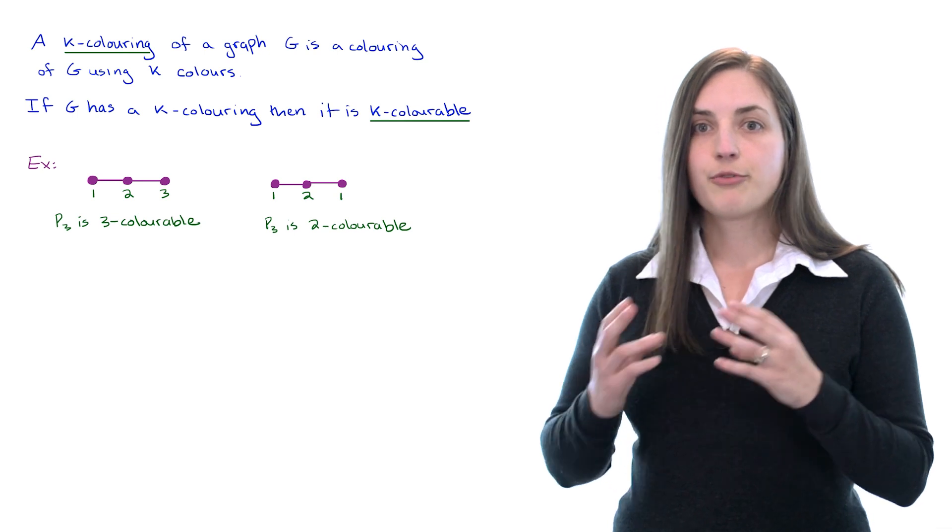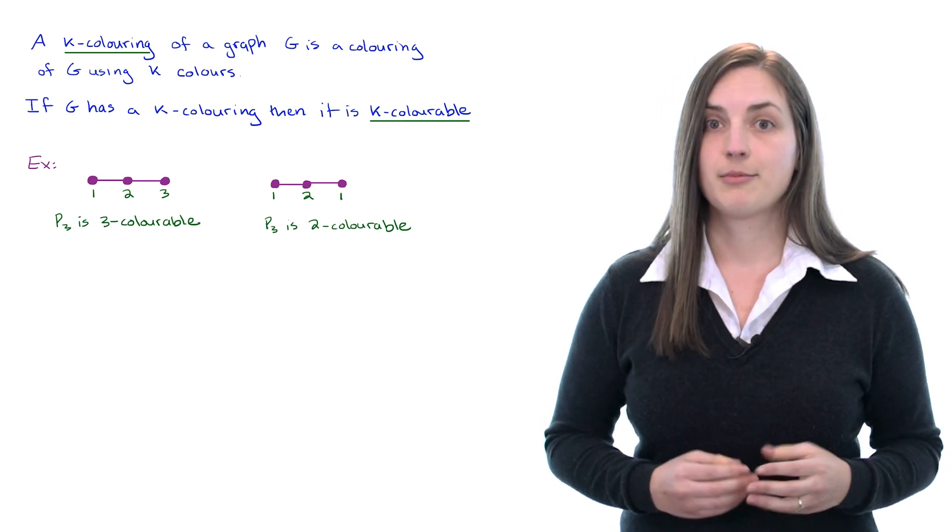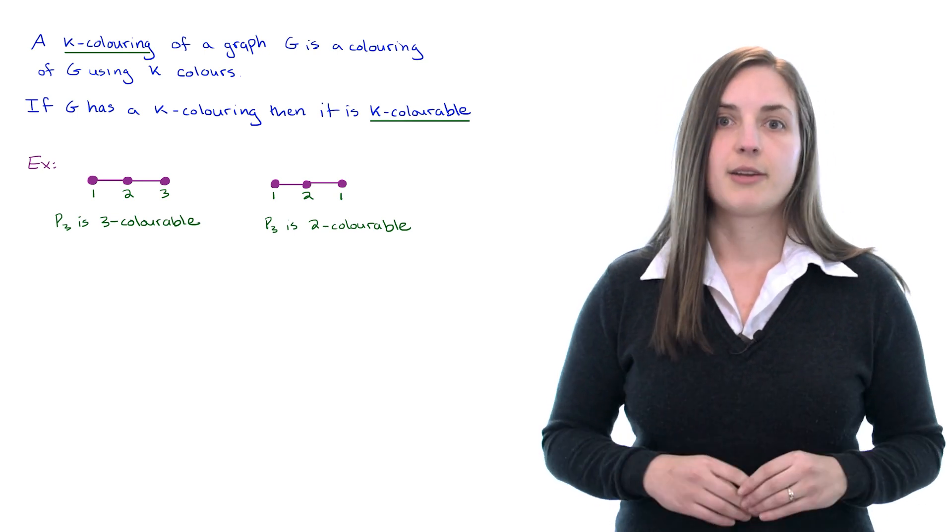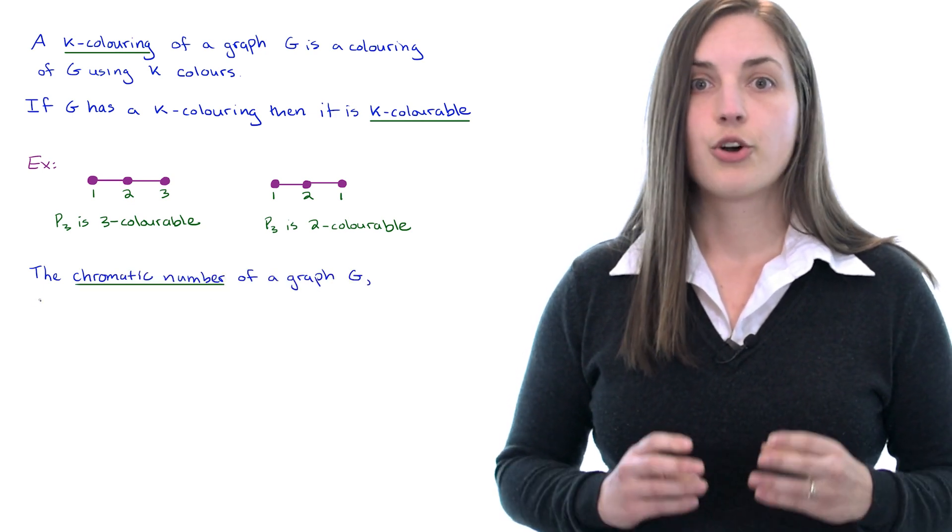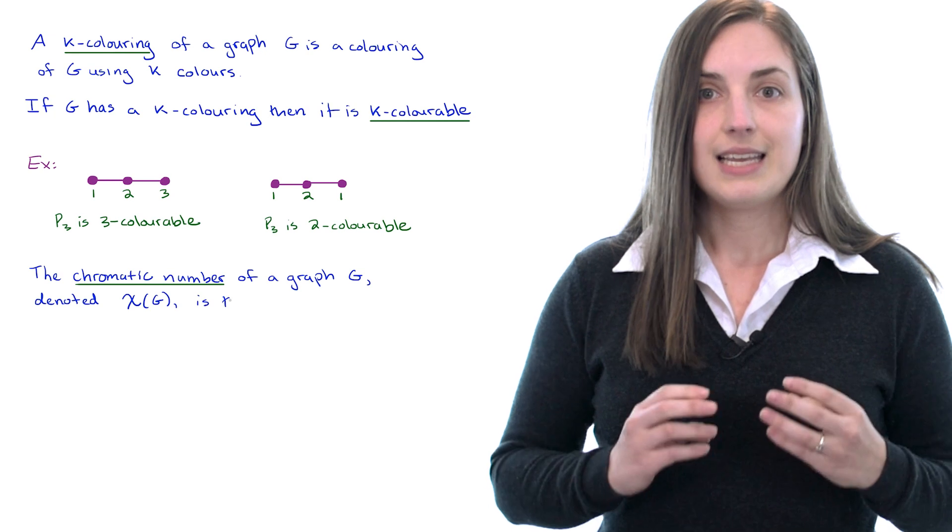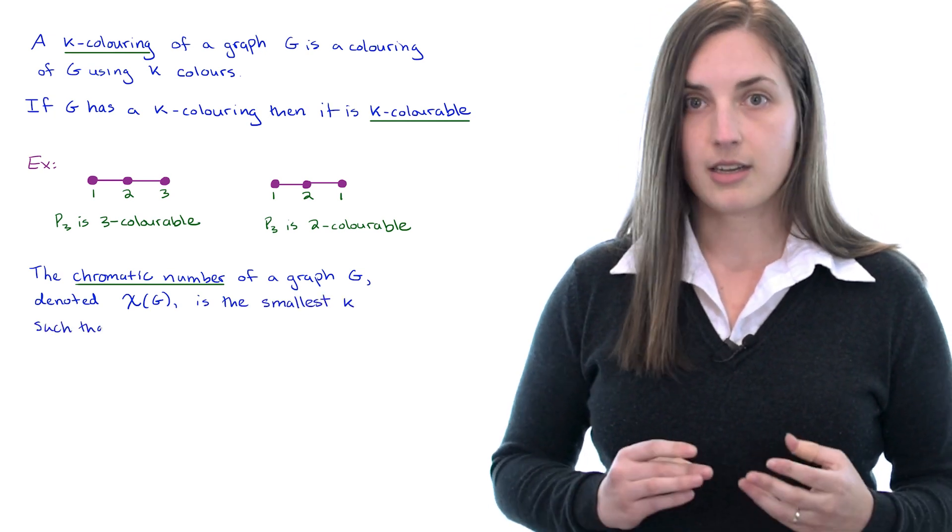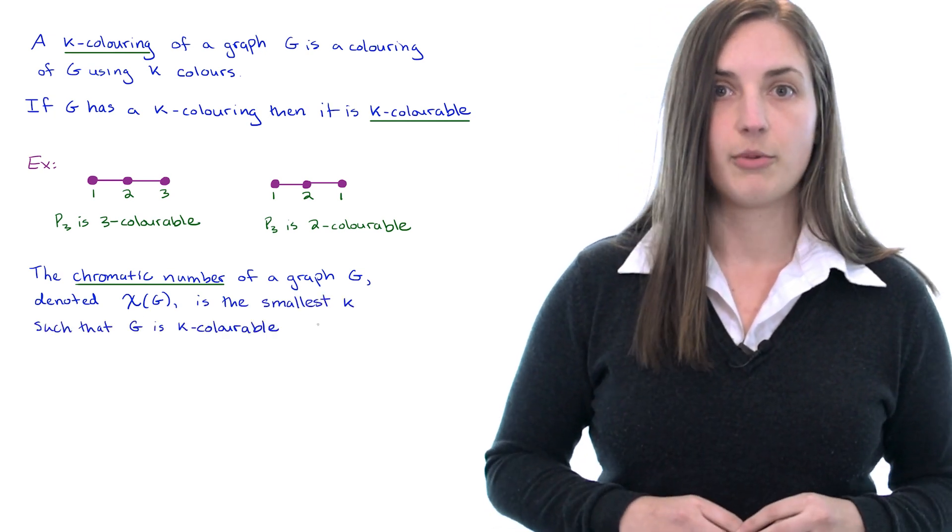So as I mentioned we are looking for k-colorings with k being as small as possible and this has a special name. The chromatic number of a graph G denoted chi of G is the smallest number k such that G is k-colorable.